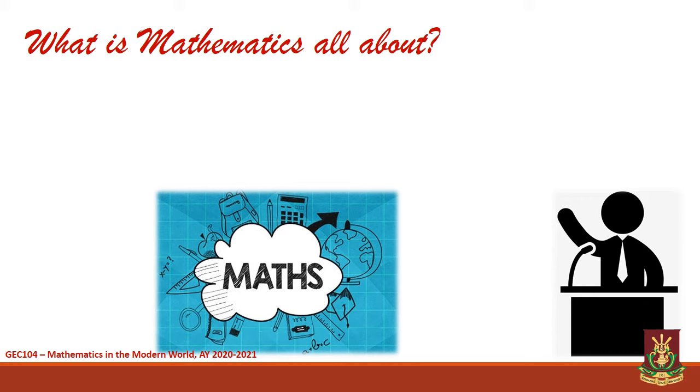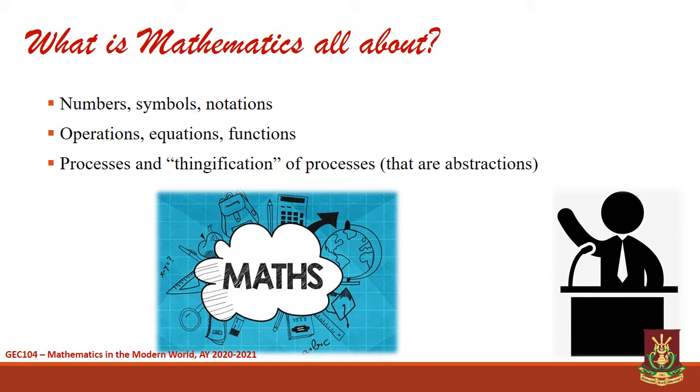When people are asked what mathematics is all about, they usually say numbers, symbols, and notations, which is partially correct. Second, people easily recognize mathematics when looking at expressions involving operations, mathematical equations, and functions. Third, a few people with adequate knowledge in mathematics say that it is all about the study of certain processes and giving concrete representations to concepts that are usually abstract in form. Lastly, mathematics is all about proving theorems, principles, and mathematical laws.